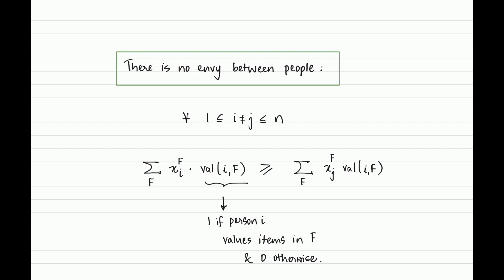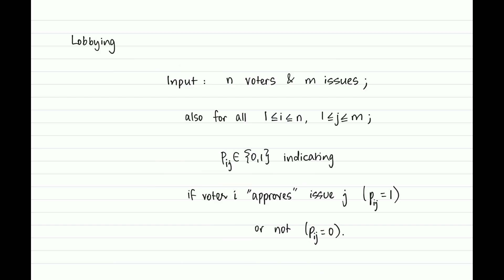We have a set of constraints over n times 2^n variables, giving us the FPT algorithm we wanted — FPT in the number of people — for the problem of finding envy-free, non-wasteful allocations in the setting where people have boolean 0/1 utilities for a bunch of items. With this we wrap up our discussion on finding non-wasteful envy-free allocations and move on to the next problem: lobbying.